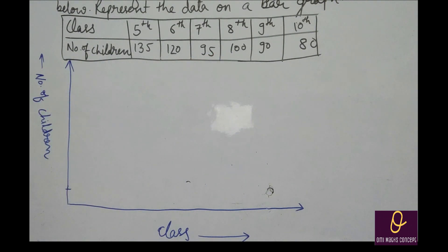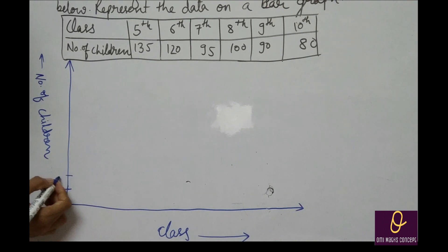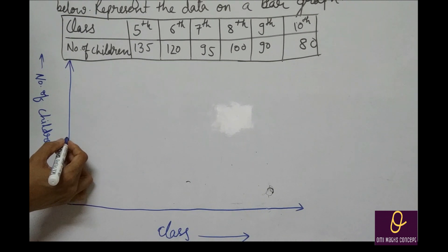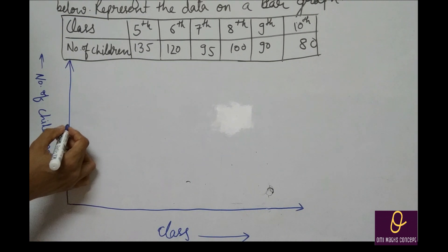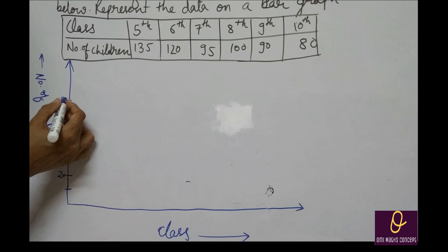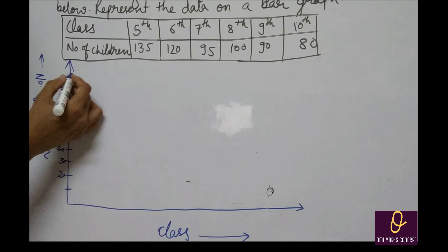अगर आप ध्यान से देखते हैं तो 10-10 का gap लेने पर यह easily draw हो जाएगा. जो first small square होता है bar graph के अंदर, वह 10 लेंगे. Then 20, 30, 40, 50, 60, 70, 80, 100, 110, 120.